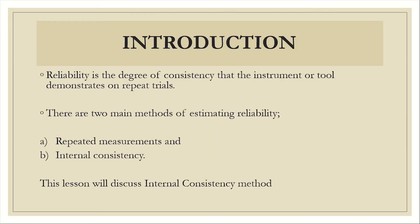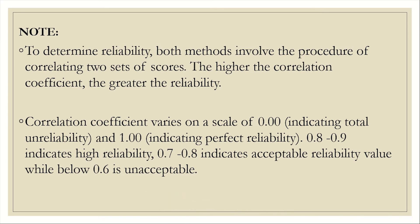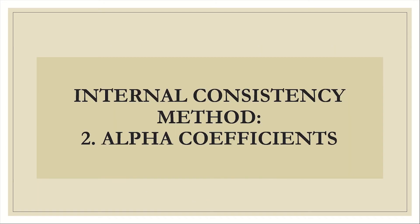Continuing with reliability — let us remind ourselves that reliability deals with consistency. The two main methods of determining reliability are repeated measurements and internal consistency. Our discussion is on internal consistency, which is the second method. We also said that reliability is determined by correlating two sets of scores, and that is why we test reliability for variables measured at the continuous level. The acceptable reliability value is 0.7 and above.